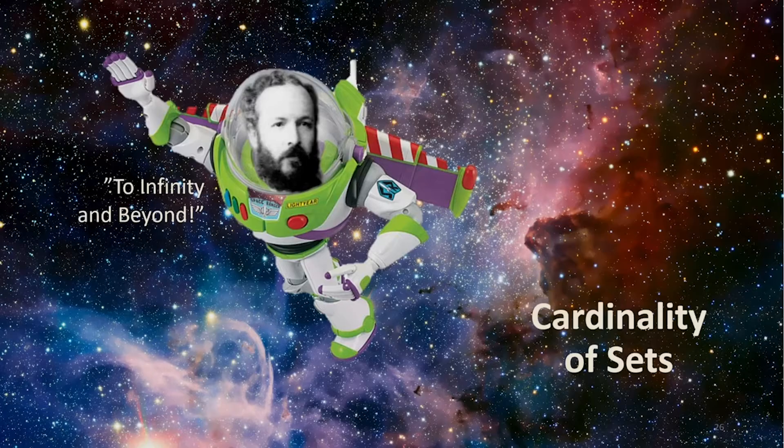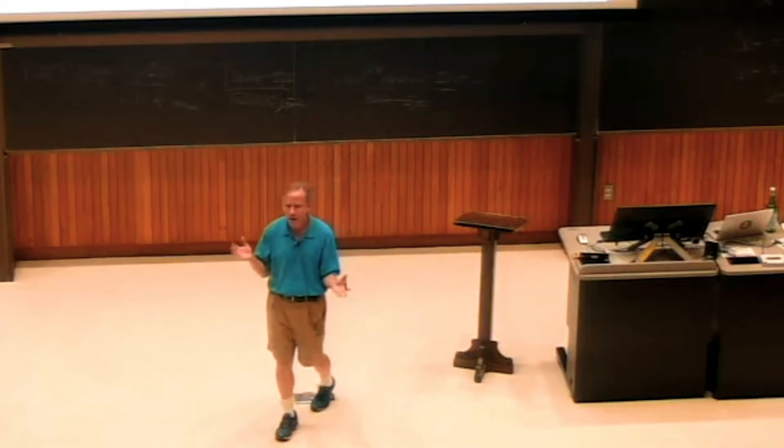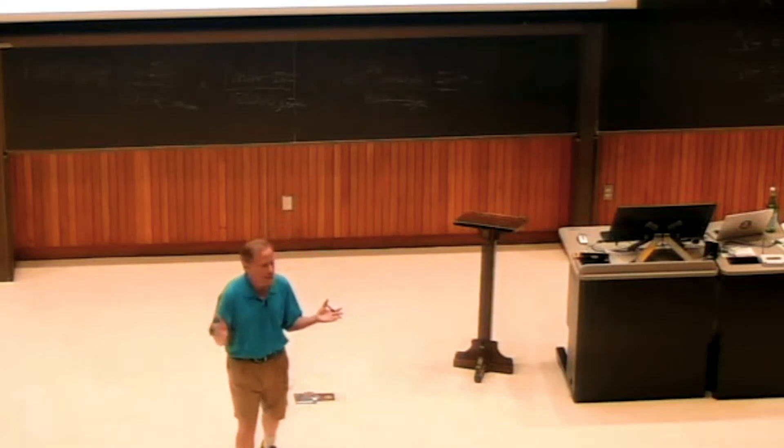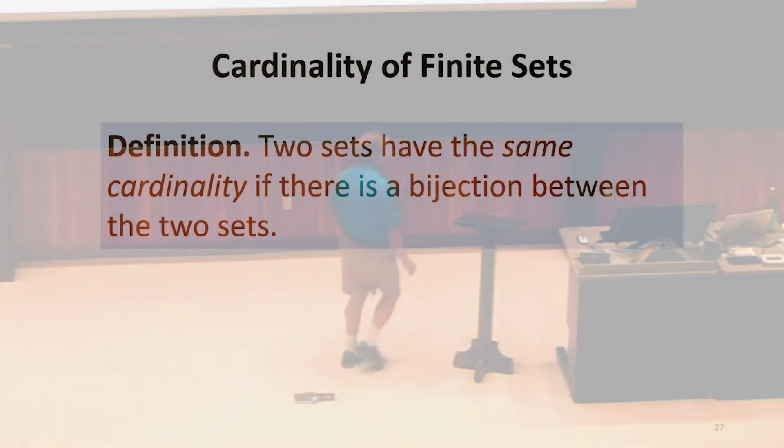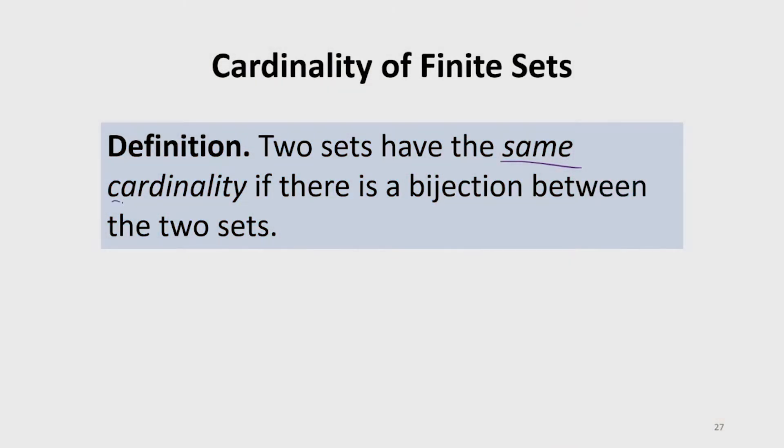We haven't defined cardinality, so we're going to define it. We have an intuition that it's something about how much, how many there are. So the first step to define it is going to be what it means for two sets to have the same cardinality.